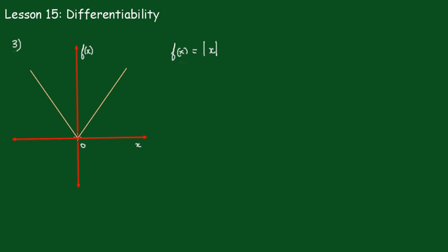But at this particular point it's not differentiable because we don't know whether it's going to have this gradient or that gradient. Now we can see from the graph, and analytically we can say that the function...